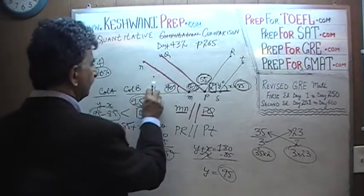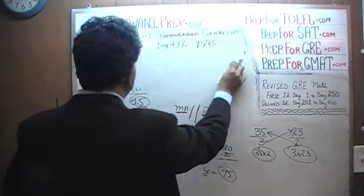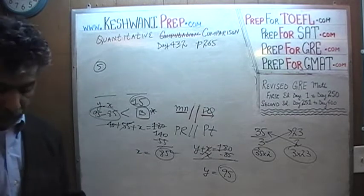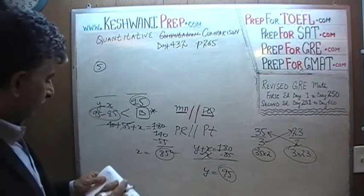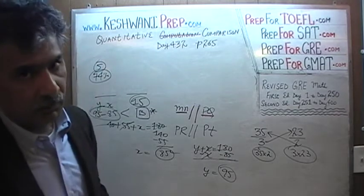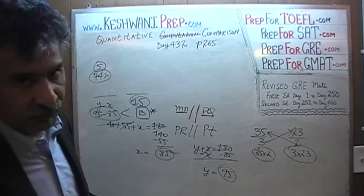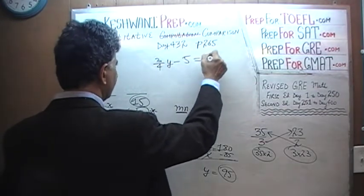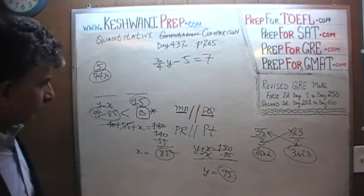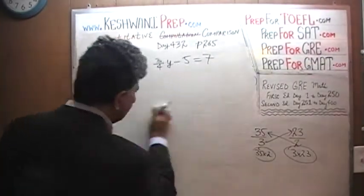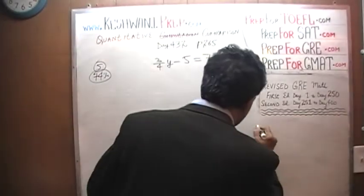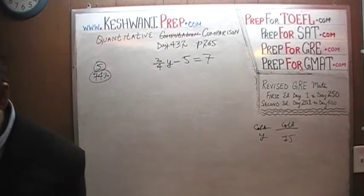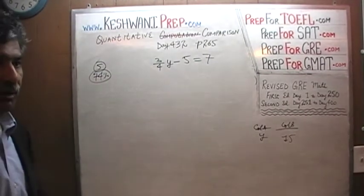Question number 5 is another straightforward question — three-quarters of the people who took the exam had no trouble with it. We are told that three-quarter Y minus 5 equals 7. What we are being asked to compare is column A, Y, versus column B, 15. Pause the video, do it yourself.